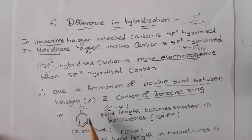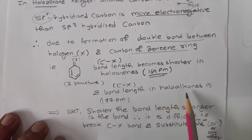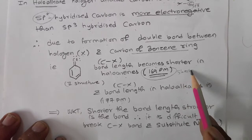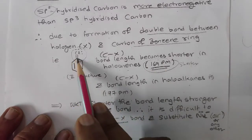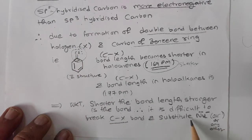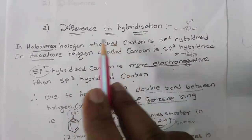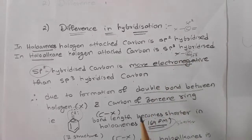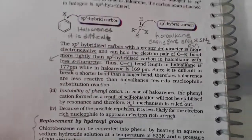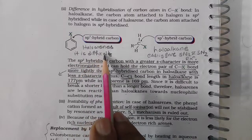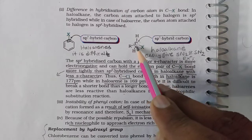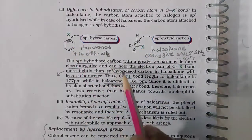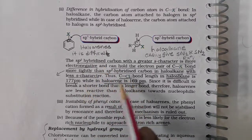Because of double bond formation, the bond length becomes shorter in haloarenes — 169 picometers — compared to haloalkanes where it is 177 picometers. Shorter bond length means a stronger bond, so it is difficult to break the C–X bond and you cannot substitute a nucleophile there. This second reason is also based on the double bond character from resonance. In haloalkanes, because the carbon is sp3, nucleophilic substitution can occur easily.